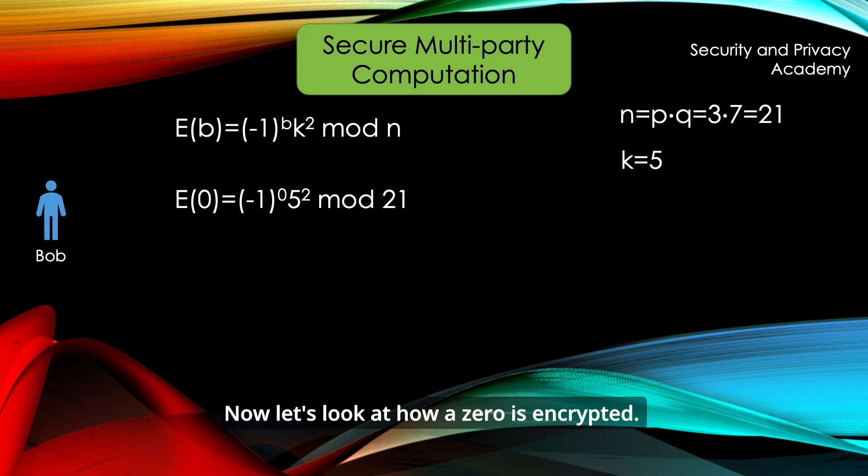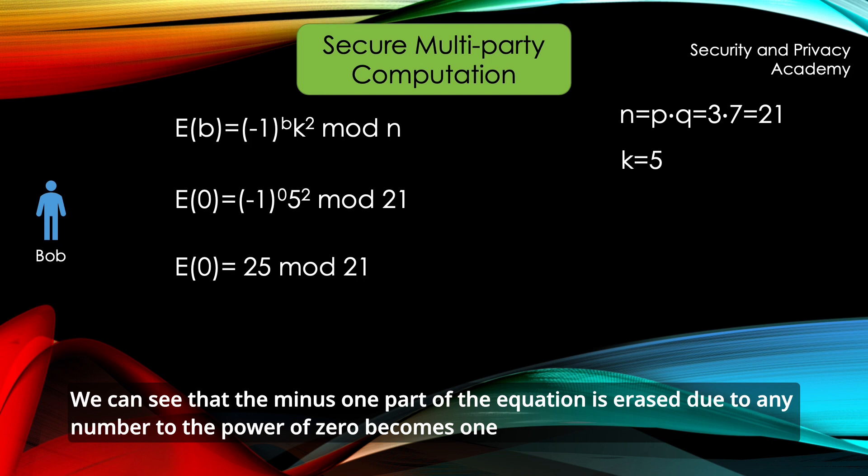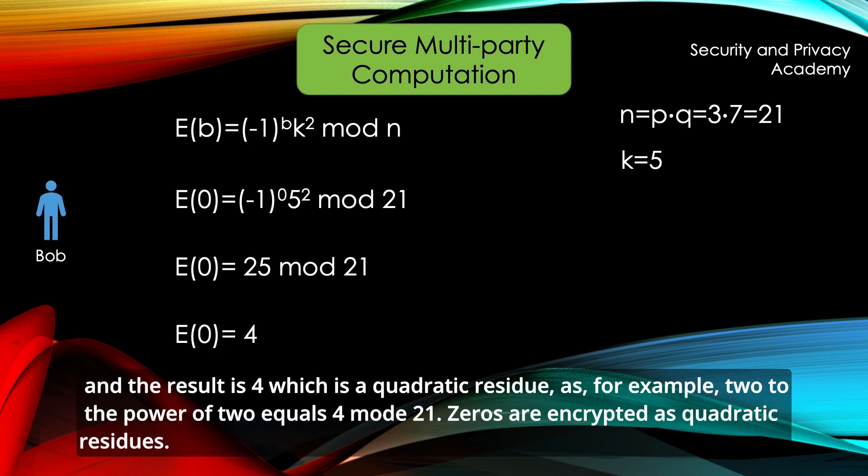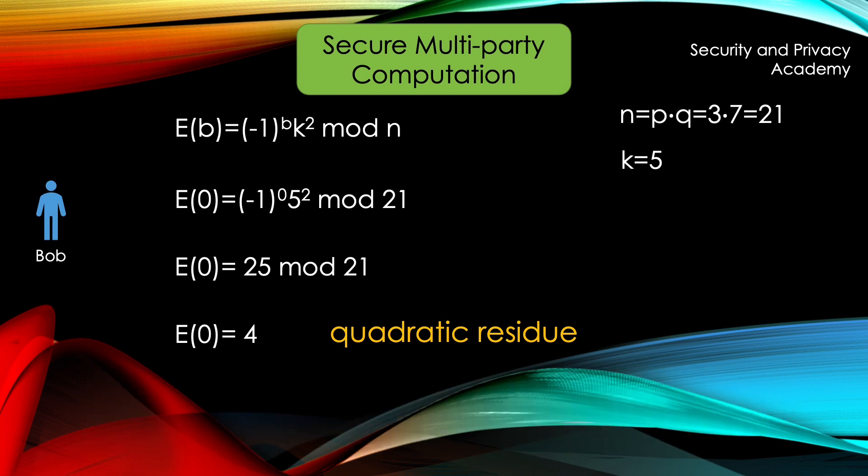Now let's look at how a 0 is encrypted. We can see that the minus 1 part of the equation is erased due to any number to the power of 0 becomes 1 and the result is 4, which is a quadratic residue, as for example 2 to the power of 2 equals 4, mod 21. 0's are encrypted as quadratic residues.